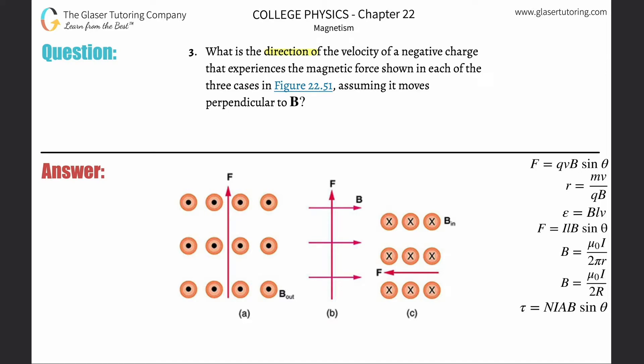Number three: what is the direction of the velocity of a negative charge that experiences the magnetic force shown in each of the three cases, assuming it moves perpendicular to B? First, please check out number one and two — I went through detailed analysis of a positive charge and then a negative charge. One thing changes when dealing with negative charges, and I'll assume you know that now, so we'll move quickly through these problems.